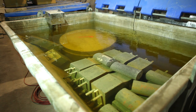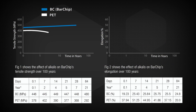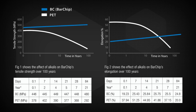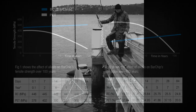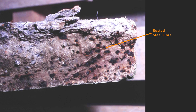Testing also proves that bar chip fibers are not affected by exposure to concrete's alkali environment, with no corrosive effects seen after 100 years of accelerated testing. In exposure testing, bar chip maintains 99.8% of its load carrying capacity after one year of exposure, compared to only 54% for steel fiber alternatives.